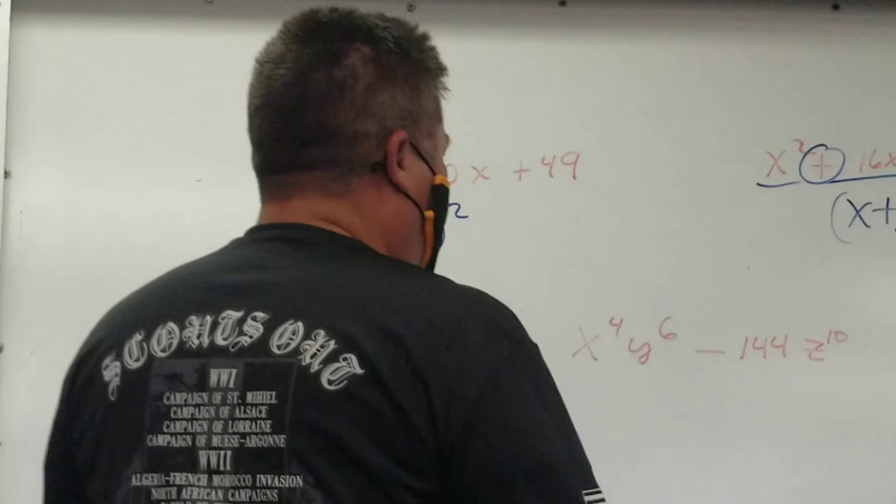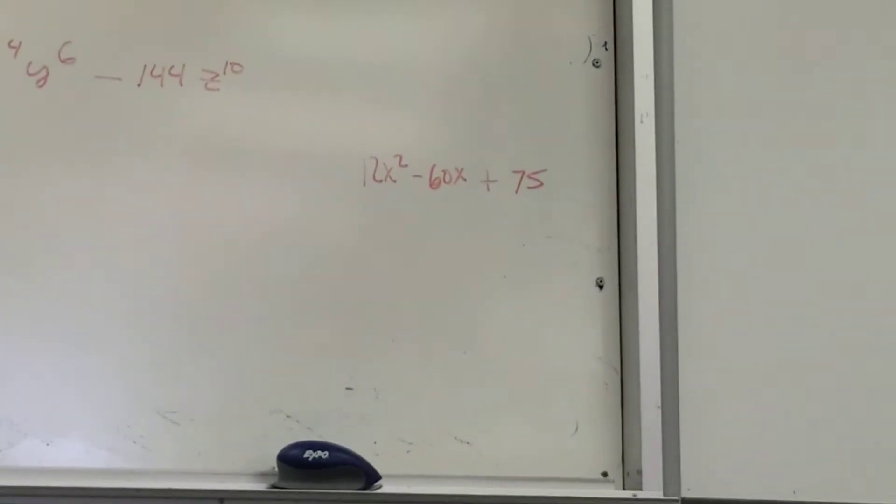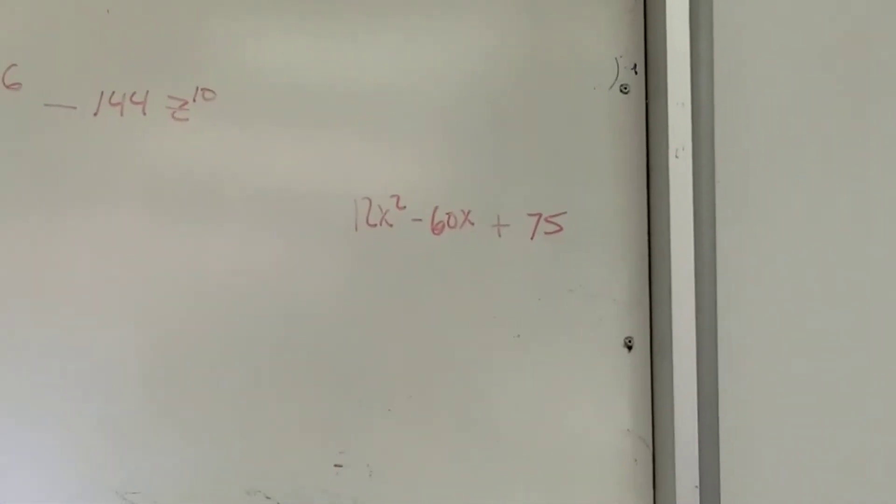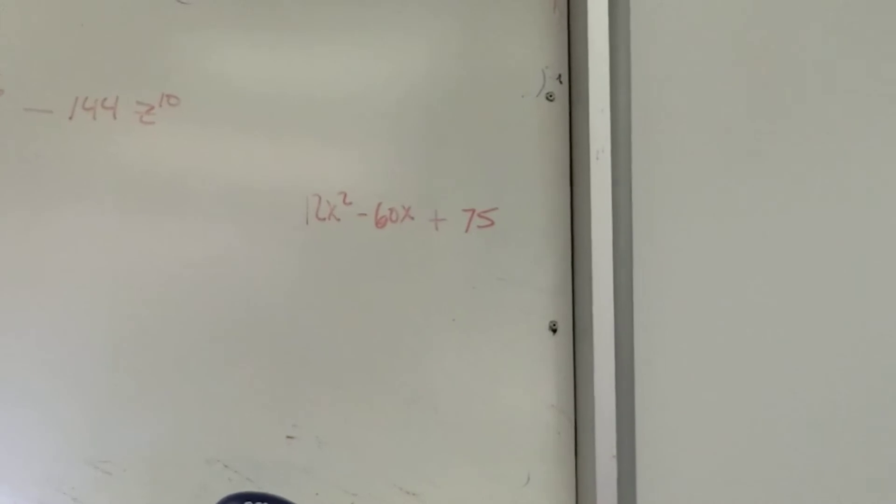Let's go to this last one. Does this look like a perfect square trinomial? No. But it might be, because maybe there's a common factor. Now look at it again. 3 will go into 12, 60, and 75.